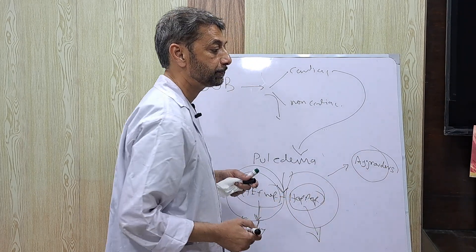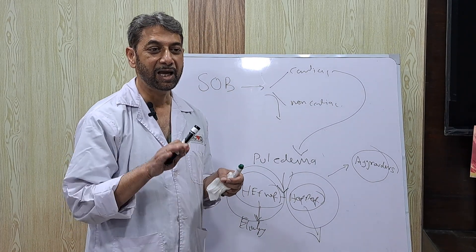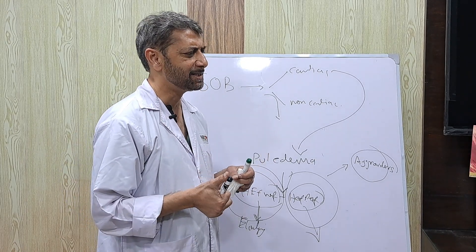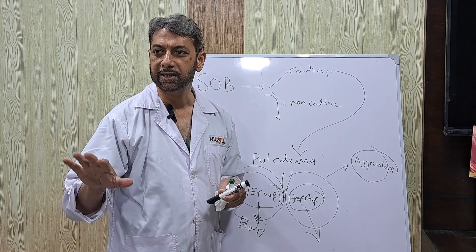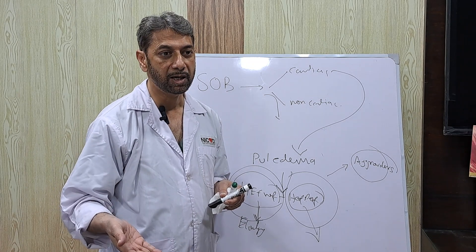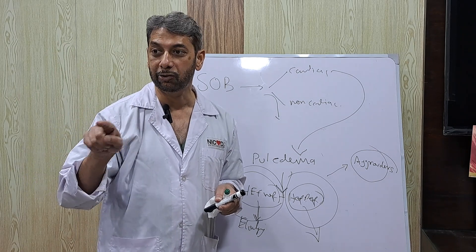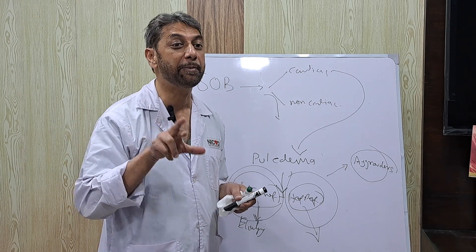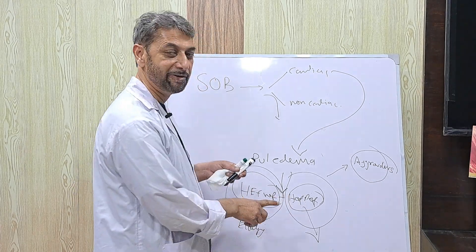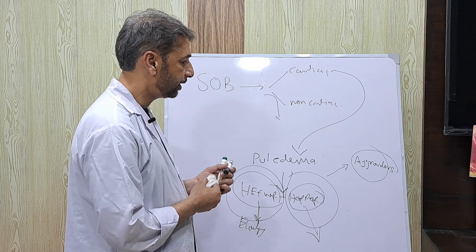Aggravators — like non-compliance with medication — are things you have to assess. There must be something acting as an aggravator. These are usually: non-compliance, additional infection, ongoing ischemia, inappropriate medication, sudden rise in pressures, or any rhythm issues. What is new that has made this patient — who was previously stable with HFpEF or HFrEF — now unstable with pulmonary edema? That is what you have to tell me.